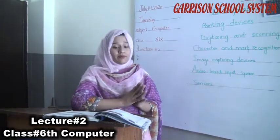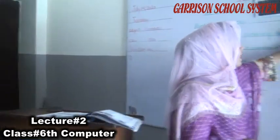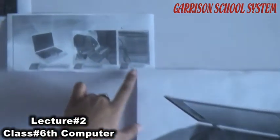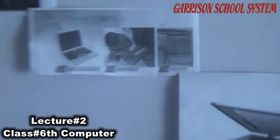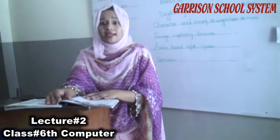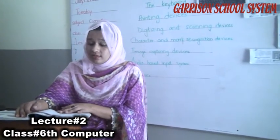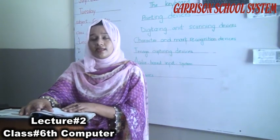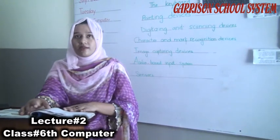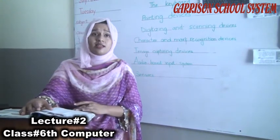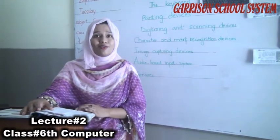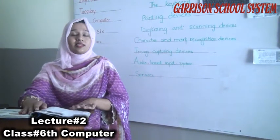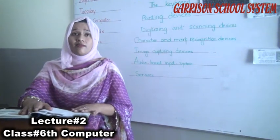Pointing devices include the touchpad, touchscreen and light pen. A touchpad is a small flat surface with buttons around the edges. Moving a stylus or finger across the pad moves the cursor, and the buttons work like mouse buttons. Touchpad is mostly used on laptops and works like a mouse.